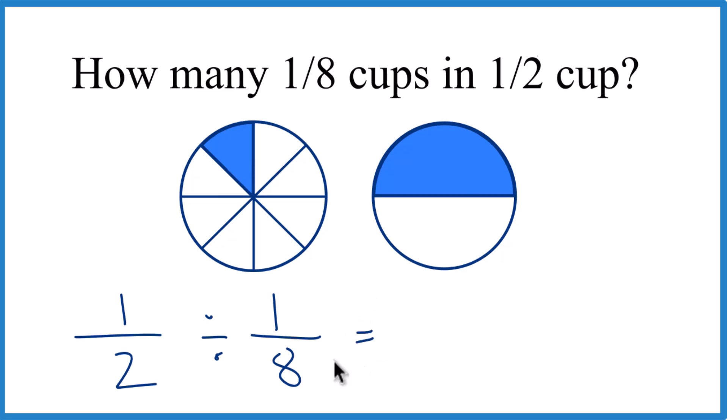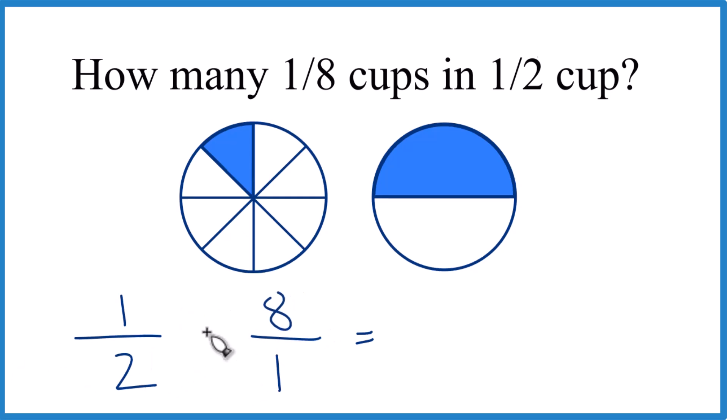What we can do, make it a little easier, we can take the reciprocal of 1 eighth. That's 8 over 1 and instead of division we're actually going to multiply here.